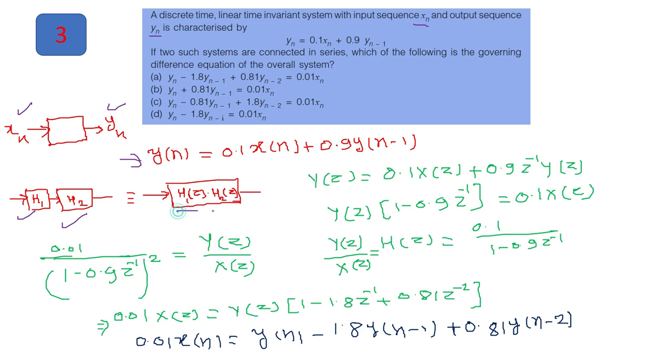If you have these two systems connected in series, then in Z domain both system function multiply. And we can do this from the difference equation. Taking Z transform on both sides, you can find the Y(Z) upon x of Z that will be H of Z, that is system function. And it will be 0.1 upon 1-0.9Z inverse. Now because both systems are same, they are connected in series, so when you will multiply with this concept, it will be 0.01 divided by 1-0.9Z^-1 whole square.